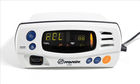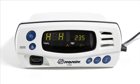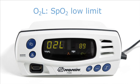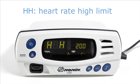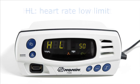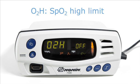You can proceed to the next limit value with each limits button press. Press the plus or minus button to increase or decrease the value to the desired limit, then press the limits button again to set the value and proceed to the next screen. O2L is the SpO2 low limit, HH is heart rate high, HL is heart rate low, and O2H is SpO2 high, appearing in that order.